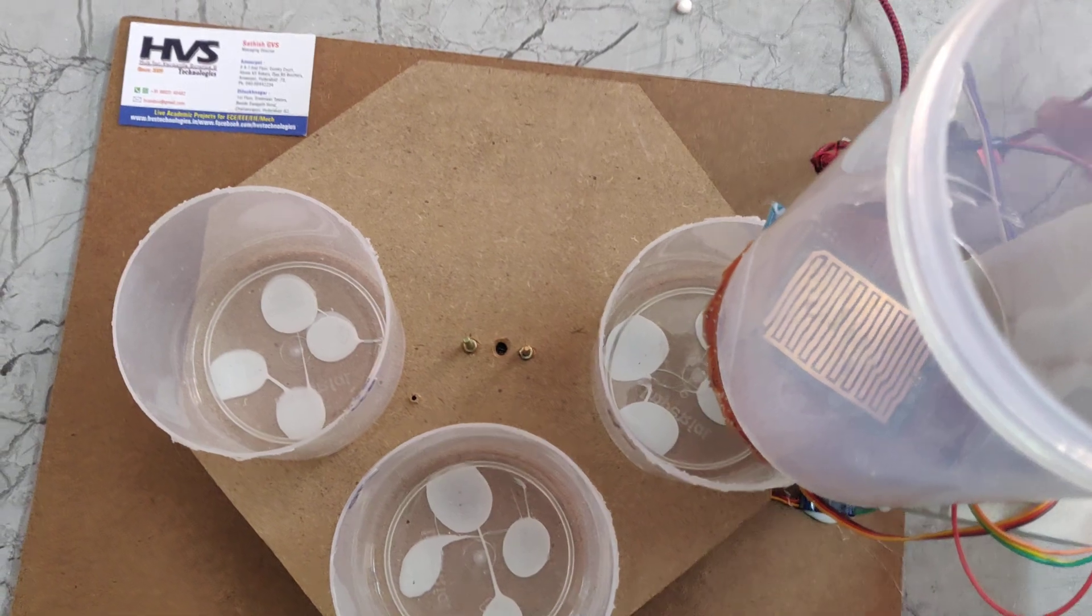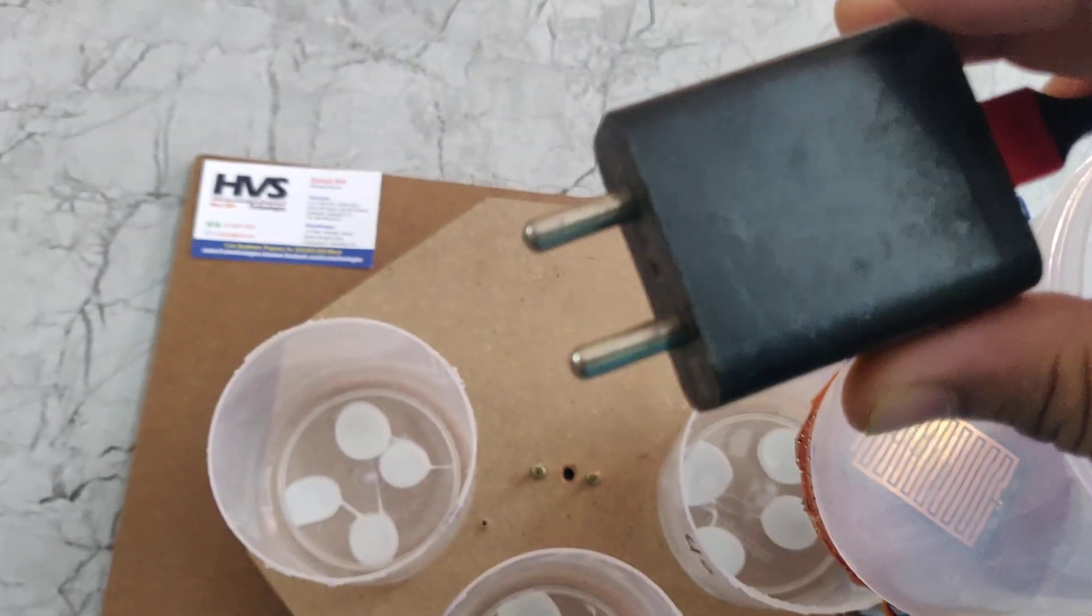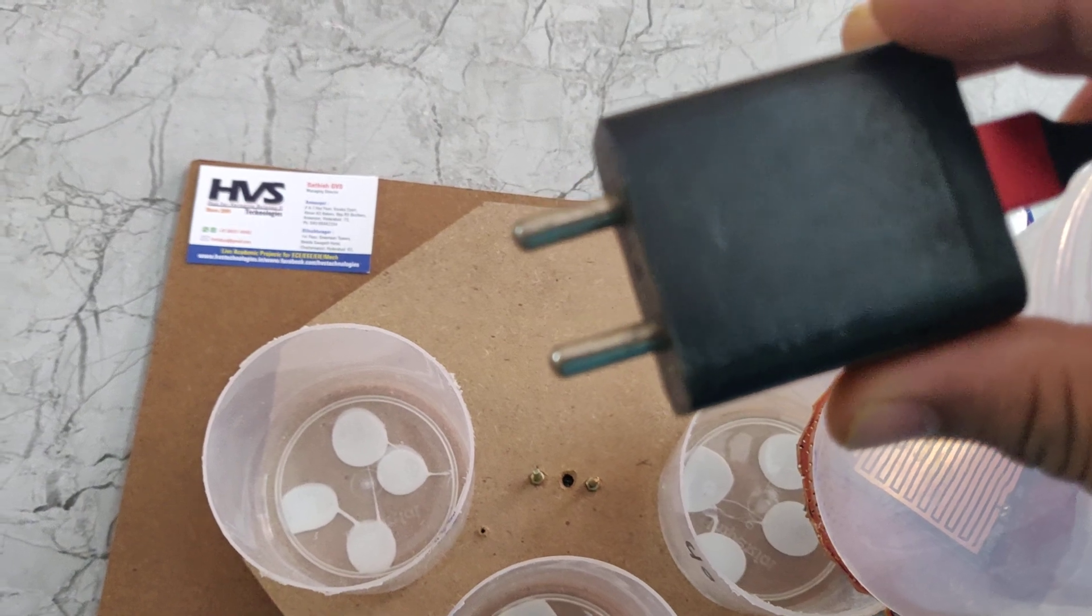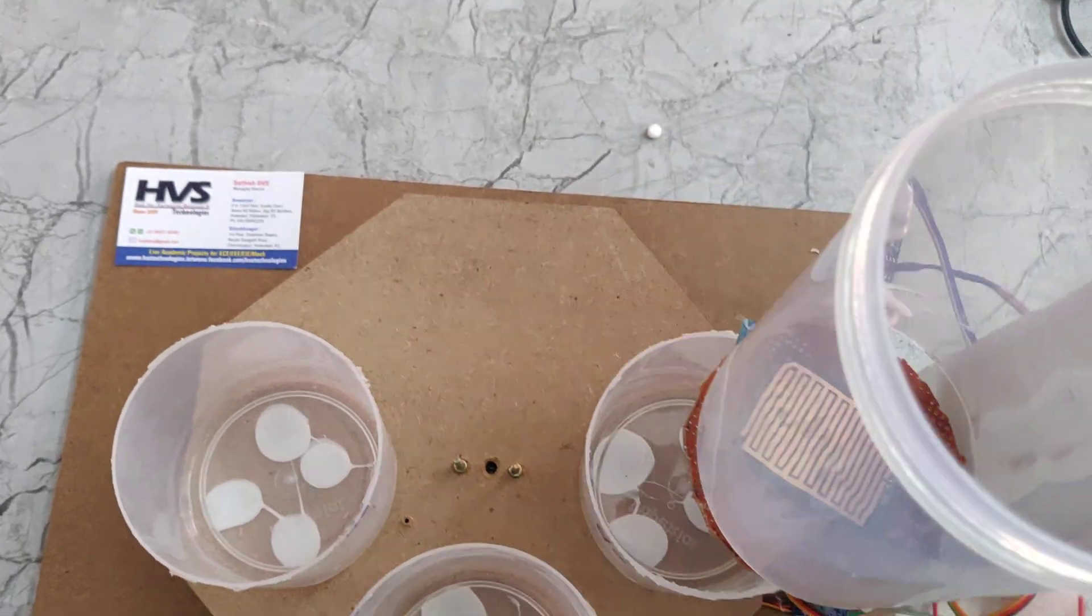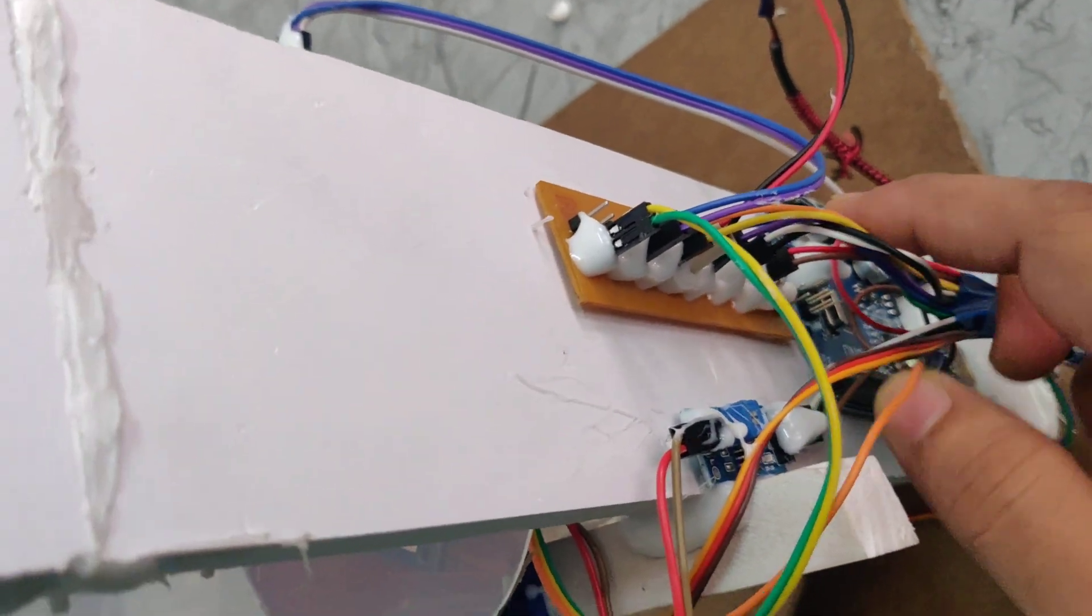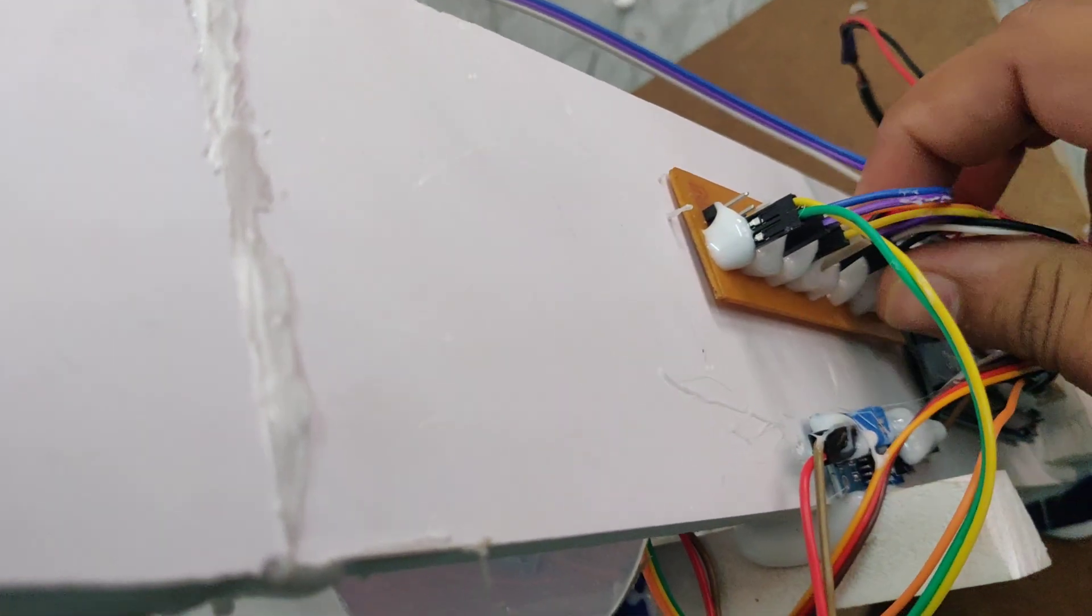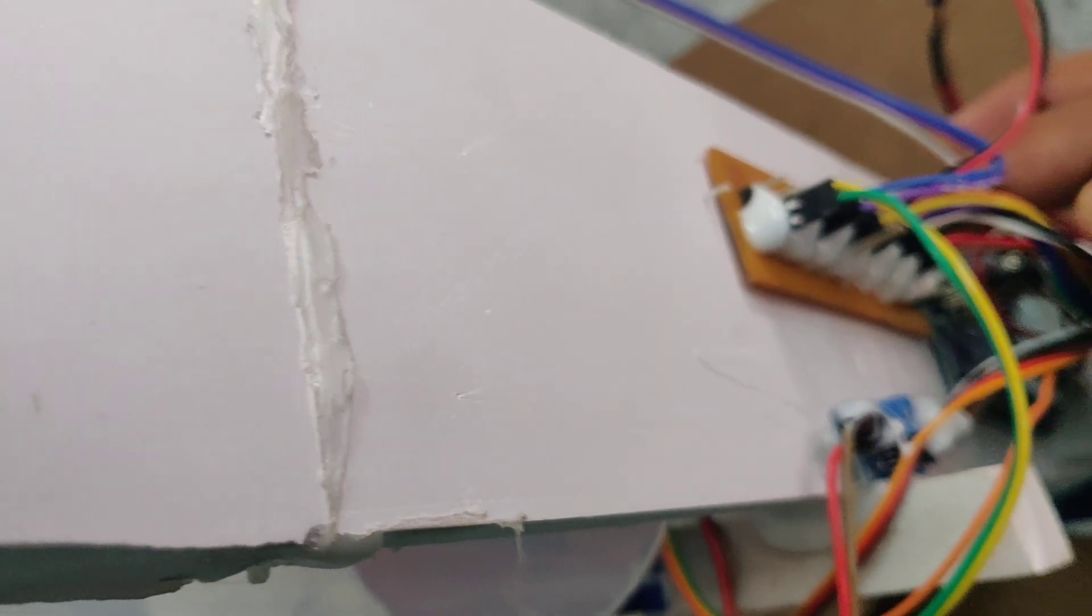We are providing the power supply through this adapter. It will take 230 volts AC supply and it will give 5 volts DC supply. That DC supply output is given to this drag PCB.